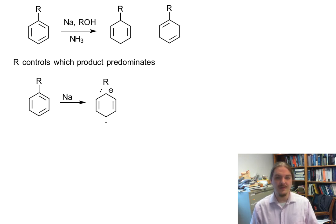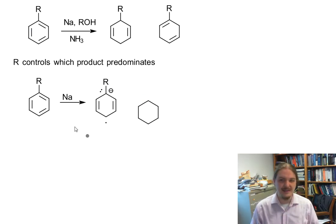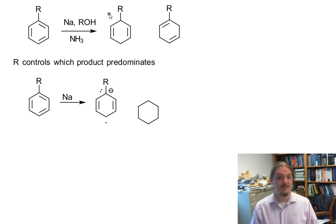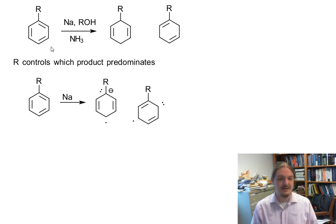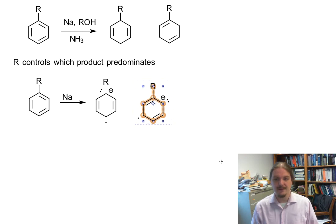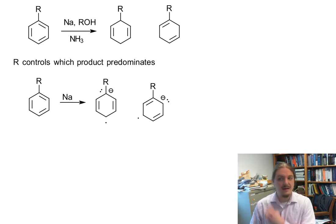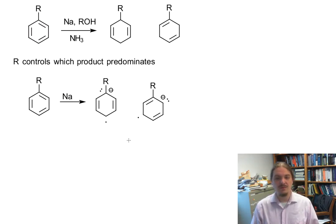The other regio-isomer — so this is the radical anion — it looks like it's going to go towards forming the first regio-isomer. And here is the radical anion that looks like it leads to the second regio-isomer.